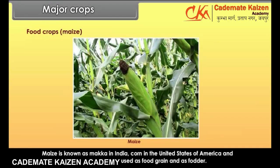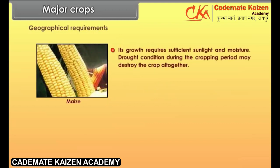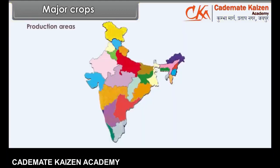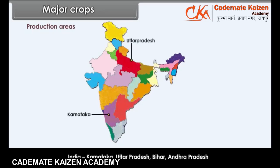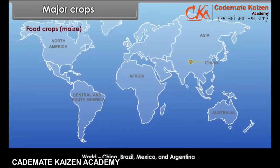Maize is known as makka in India, corn in the United States of America, and Indian corn in Europe. Maize is used as food grain and as fodder. Its growth requires sufficient sunlight and moisture. Drought conditions during the cropping period may destroy the crop altogether. Stagnant water in the maize fields is harmful to plants. Production areas in India: Karnataka, Uttar Pradesh, Bihar and Andhra Pradesh. World: China, Brazil, Mexico and Argentina.